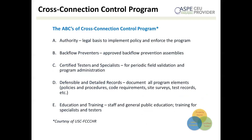There's a mnemonic device — the ABCs — to remind us of all the key elements of a cross-connection control program that protects public water. A is authority: the legal basis to implement a policy and enforce it. Typically people don't install backflow preventers unless they are mandated to, and if they're mandated to, they might not do it unless they face fines or cessation of service if they don't comply. Having that authority and legal basis is very important.